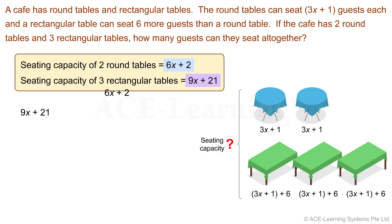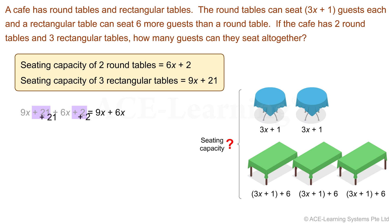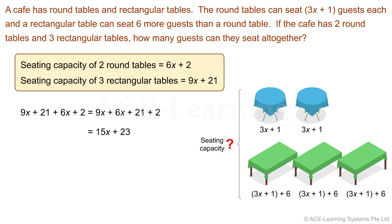While the round tables can seat 6x plus 2 guests. Now let's simplify this expression — gather all the terms in x, then all the numbers. The terms in x add up to 15x, and the numbers add up to 23. So the seating capacity of the cafe is 15x plus 23.